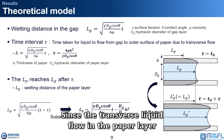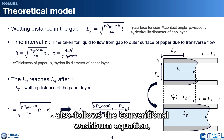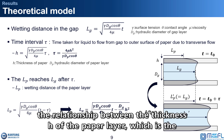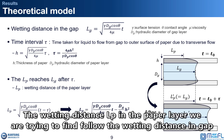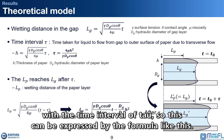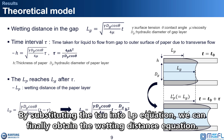Since the transverse liquid flow in the paper layer also follows the conventional Washburn equation, the relationship between the thickness h of the paper layer, which is the distance to be moved, and the travel time tau can be obtained accordingly. The wetting distance Lp in the paper layer we are trying to find follows the wetting distance in the gap with the time interval of tau, so this can be expressed by a formula. By substituting tau into the Lp equation, we can finally obtain the wetting distance equation.